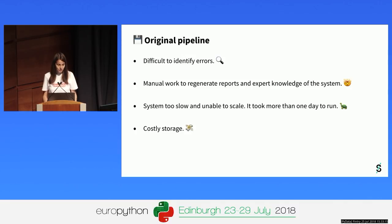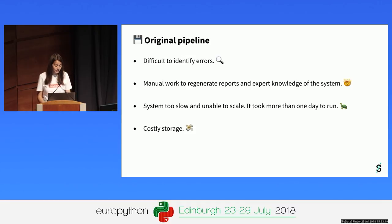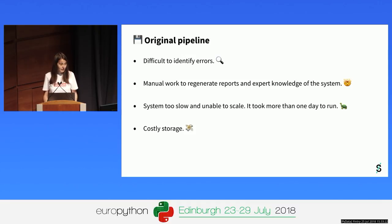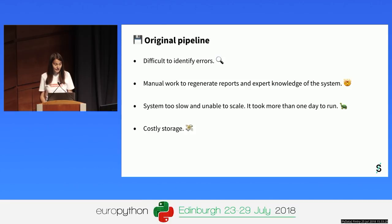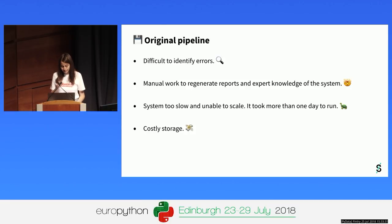The previous pipeline was not able to handle this number of transactions. The main problem was that it was a collection of scripts without any formal dependency definition between them, and this was creating two issues. First, it was difficult to identify errors. And secondly, even if you managed to identify where the error was coming from, it was difficult to know which steps of the pipeline needed to be rerun to generate the accounting reports again. Apart from that, the system was really slow.